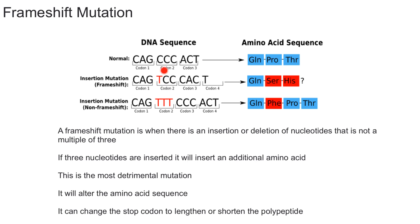Frameshift mutations are generally the most detrimental because they completely alter the protein. As you can see, adding a single T changes every amino acid after that point — the proline becomes a serine, and so on — so most of the downstream amino acids are going to be different.